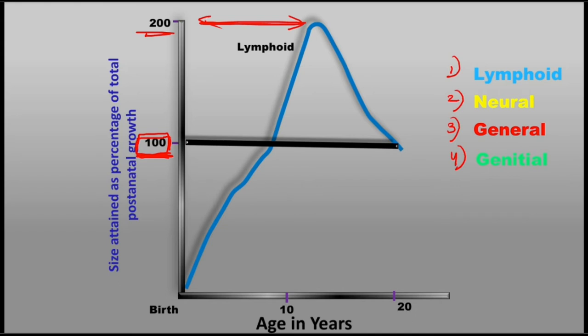With lymphoid tissue, it's worth noting that growth was earlier defined as an increase in size, but that definition doesn't hold true for lymphoid tissues — because as age progresses, lymphoid tissue actually decreases in size.